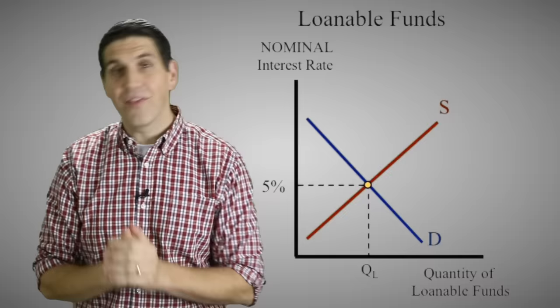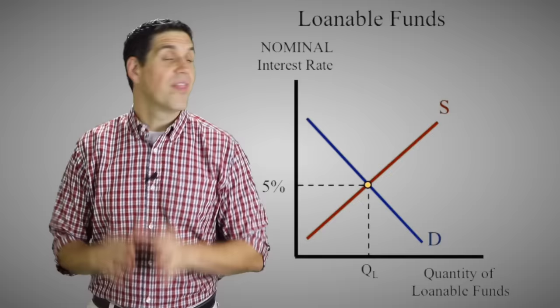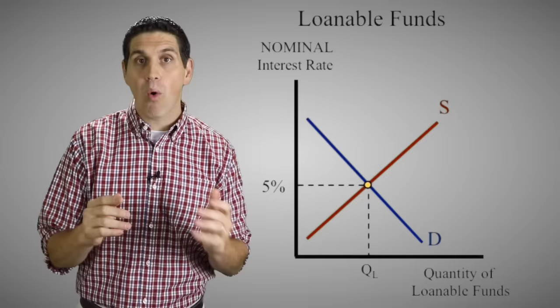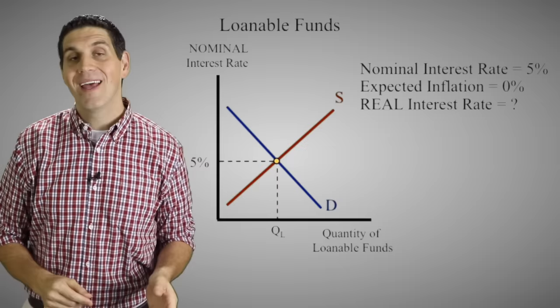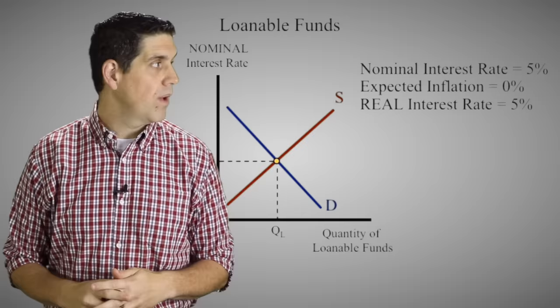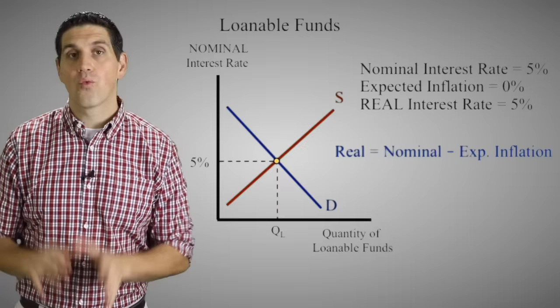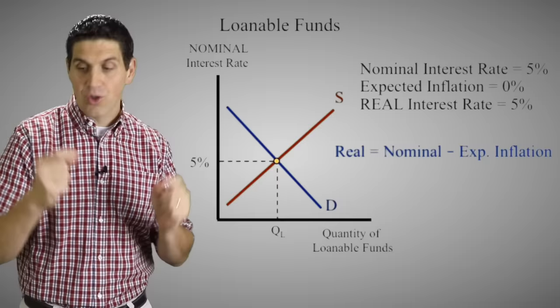Supply and demand come together and set the equilibrium interest rate — let's say 5%. This graph is all about the long run; the decision to borrow and lend has more to do with long-run risk and rewards than short-run changes in the economy. Let's assume the equilibrium nominal interest rate is 5% and expected inflation is 0%. So the real interest rate — the nominal rate minus expected inflation — is also 5%. That's the amount that lenders expect to receive and borrowers expect to pay after inflation.